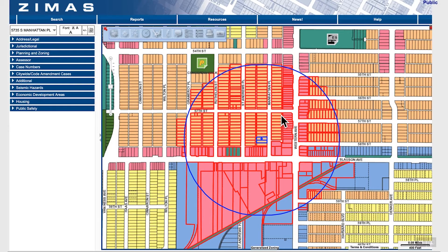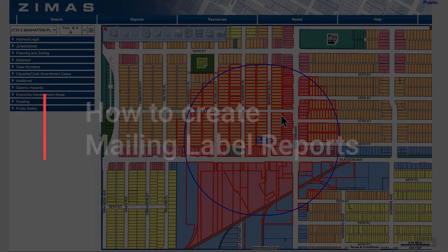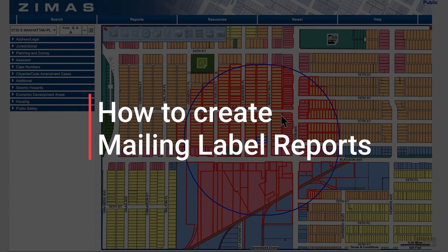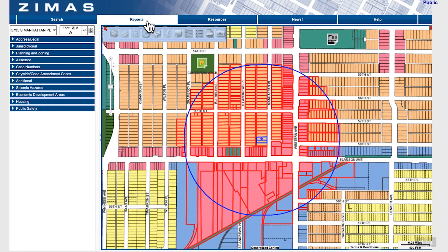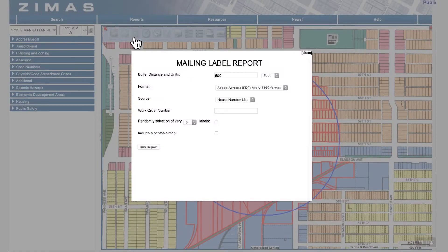This video will show you how to create a mailing label report. The mailing label feature allows you to enter a buffer distance around a specified parcel or a group of parcels. All parcels that fall within the specified buffer distance are included in the mailing label report.